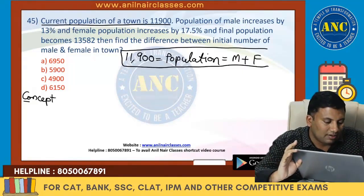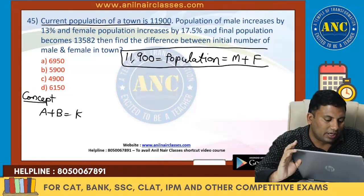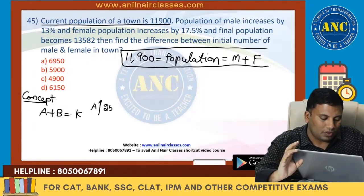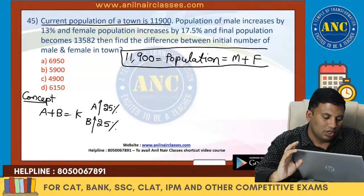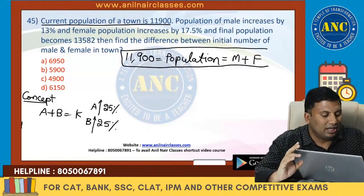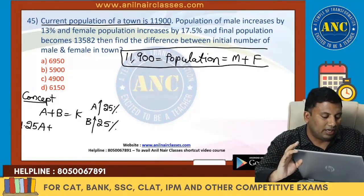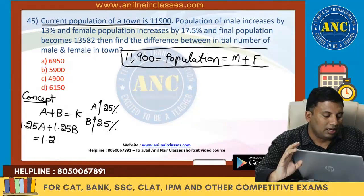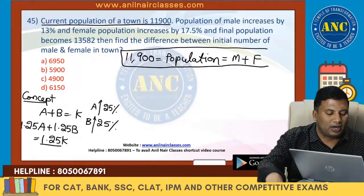First key concept: A plus B equals K. Suppose A increases by 25% and B increases by 25% — then A becomes 1.25A, B becomes 1.25B, so K also increases by 25%, giving 1.25(A+B).